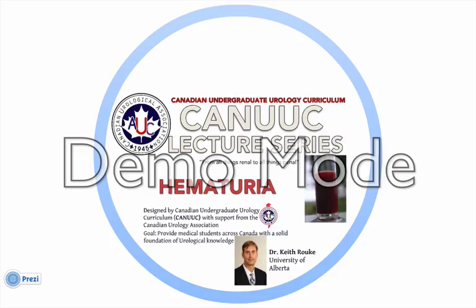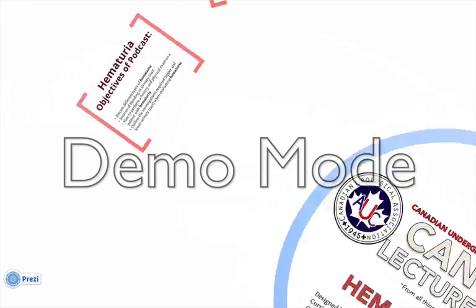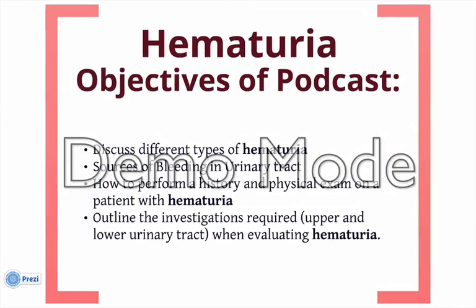After listening to this podcast, learners will be able to discuss the different types of hematuria and the possible sources of the bleeding in the urinary tract. Learners will also be able to highlight the parts of the history and physical examination which are most important in assessing the patient with hematuria. Finally, listeners will be able to describe the range of tests that are available to assess the patient with this symptom.